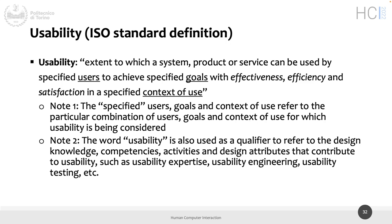First, let's speak about usability. We mentioned before that we have a standard definition — this is actually an ISO standard. The defined usability is the extent to which a system, product, or service can be used by specified users to achieve specific goals. There are people that want to accomplish a goal in a specific context of use. They add three words: effectiveness, efficiency, and satisfaction.